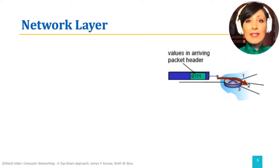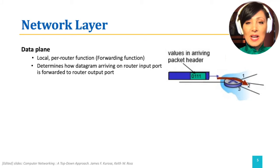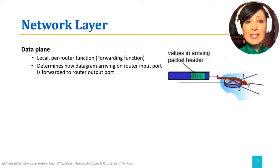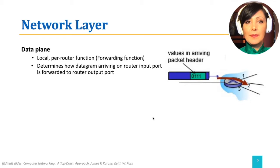The two interacting parts of the network layer are data plane and control plane. The forwarding function is performed at what we refer to as the data plane. The data plane implements local per-router functionality of forwarding, which determines how a datagram arriving on router input ports is forwarded to the appropriate router output port.